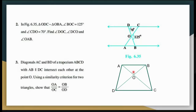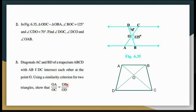By AA similarity, I get triangle AOB similar to triangle COD. Therefore, by CPSC the sides are proportional: OA upon OC equals OB upon OD. Hence it is proved.